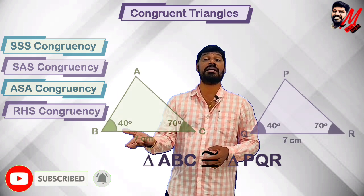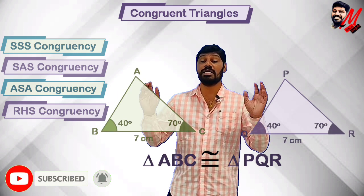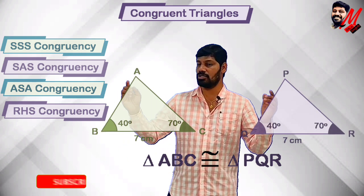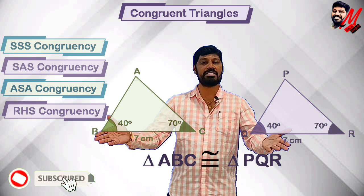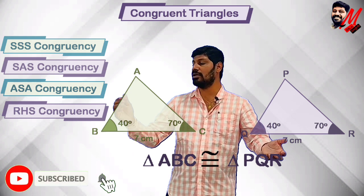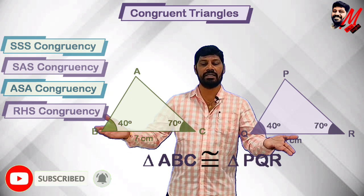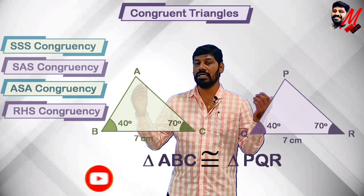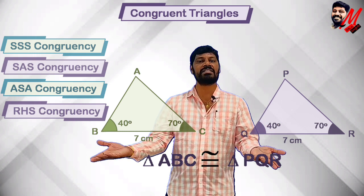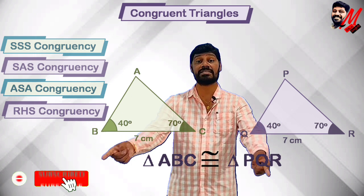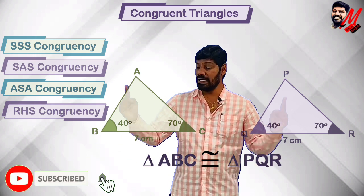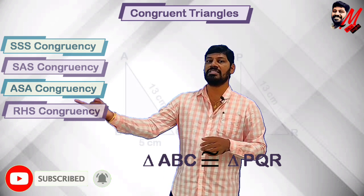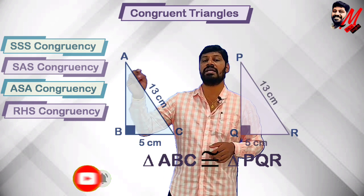For an ASA example: triangles ABC and PQR have two angles and the included side. Suppose angle A equals 40 degrees, angle B equals 70 degrees, and AB equals 7; and in triangle PQR, angle P equals 40 degrees, angle Q equals 70 degrees, and PQ equals 7. According to ASA congruency, these two triangles are congruent.